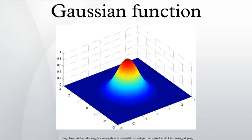A particular example of a two-dimensional Gaussian function is. Here the coefficient a is the amplitude, x0, y0 is the center and sigma x, sigma y are the x and y spreads of the blob. The figure on the right was created using a equals one, x0 equals zero, y0 equals zero, sigma x equals sigma y equals one. The volume under the Gaussian function is given by.